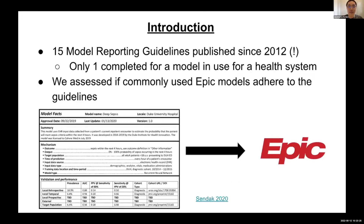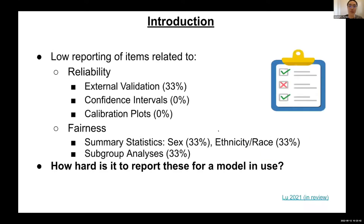Fifteen such reporting guidelines have been published since 2012, but only one was completed for a model actually in use within a health system — the sepsis model at Duke. We wanted to check whether models currently used by Epic adhere to these guidelines. The takeaway: only a third had external validation, there were no confidence intervals, and calibration plots were largely missing.